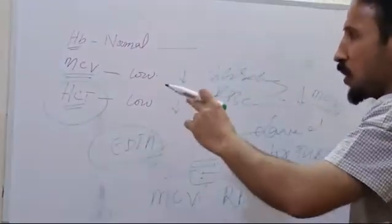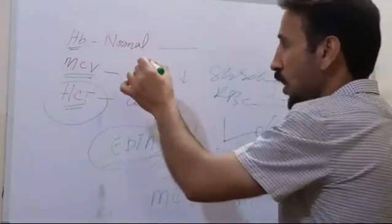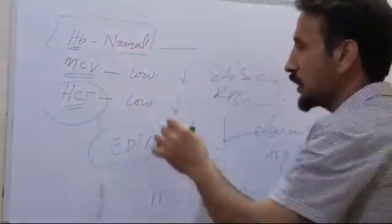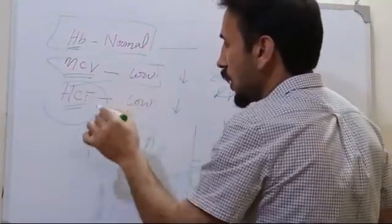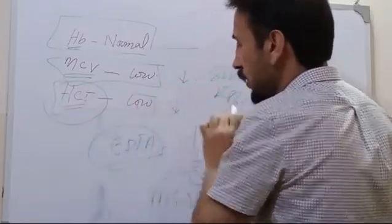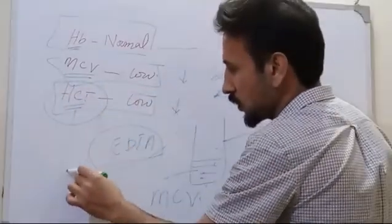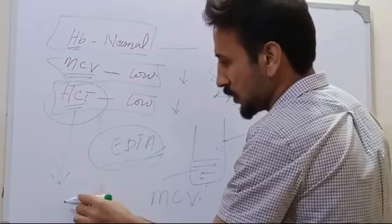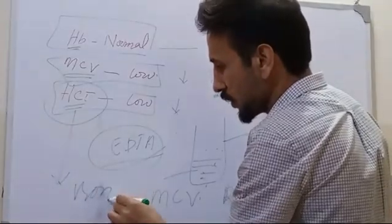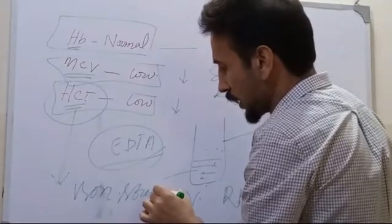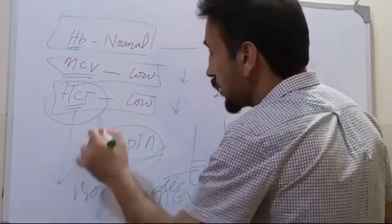So this is a common problem and this can avoid unnecessary investigations like a patient, a female patient who has a normal Hb but the MCV is low and so is the hematocrit level. This can lead to unrealistic iron studies, which could be avoided by clearly interpreting these investigations by these formulas.